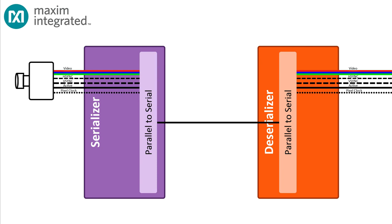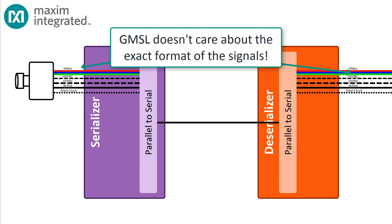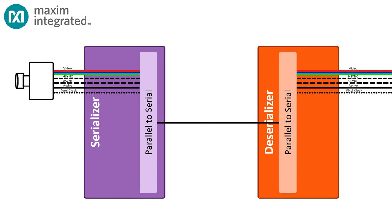Those sampled signals may be the red, blue, and green outputs from the camera. They might be signals in the YUV color space, or the signals could be something else entirely. The point is, GMSL just doesn't care — what goes in is what comes out. But what is the physical nature of those signals?